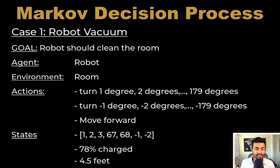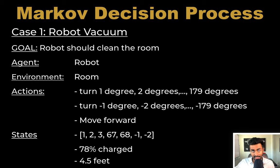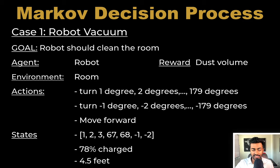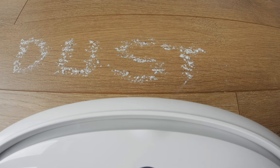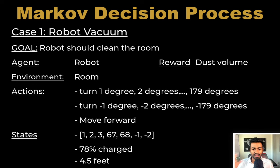The state is a snapshot of the environment — in this case, a snapshot of the room. This could include, for every single degree, whether there is an obstacle within six inches, as well as how much charge the Roomba has or how far it is from the charging port. The reward could be the volume of dust collected in the container, since more dust means more of the room has been cleaned, aligning with our goal for the Roomba.